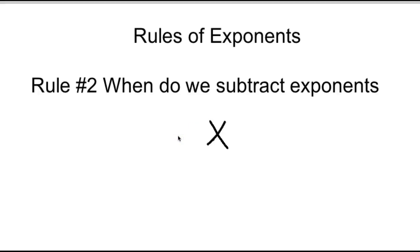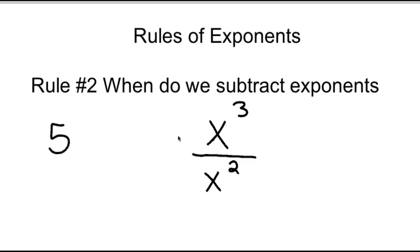So if we had x cubed divided by x squared, or maybe we don't necessarily want to do variables — maybe we had 5 to the fourth divided by 5 squared.